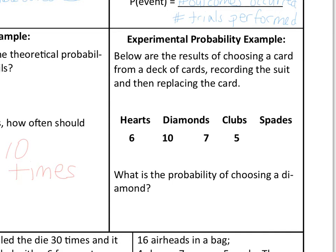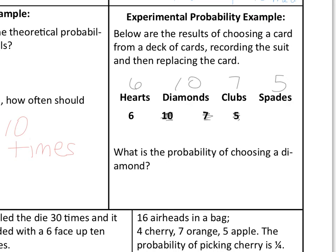We have to make some slight adjustments because things weren't aligned correctly. We have six hearts, ten diamonds, seven clubs, and five spades. We are asked: what's the probability that we would choose a diamond? There are ten diamonds total that we chose. We add six plus ten plus seven plus five to find the total number of times we chose a card, which is 28. Therefore, the probability of choosing a diamond is ten out of 28, which simplifies to five over fourteen.